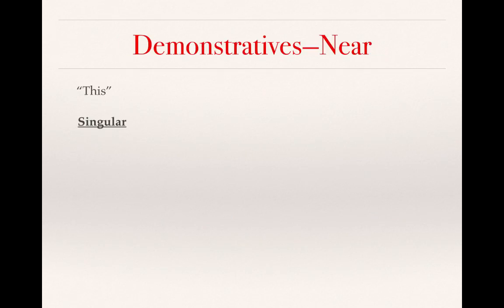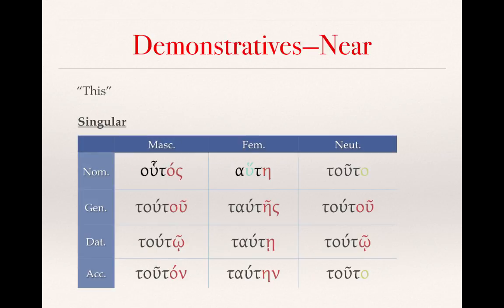So we've talked about the concept of demonstratives and their particular uses in Greek. Now let's look at the forms. Here is the singular form of the near demonstrative — this — houtos. You'll notice that the red endings are endings that we have become very familiar with through the course of this semester, similar to the endings of the article and of adjectives learned in previous lessons.